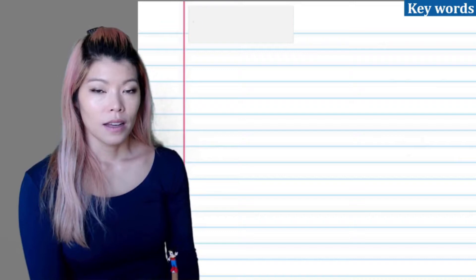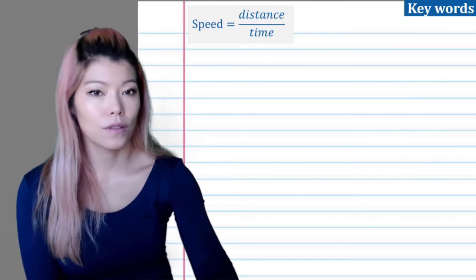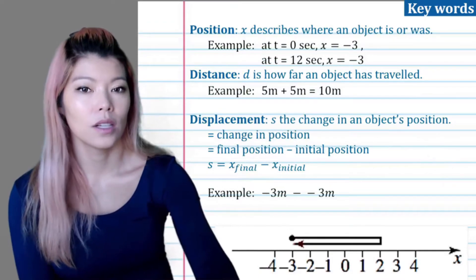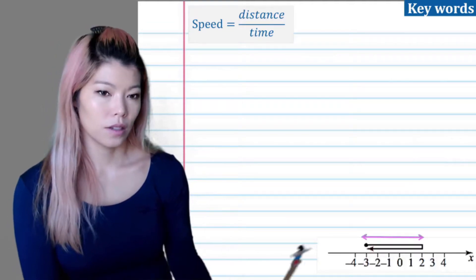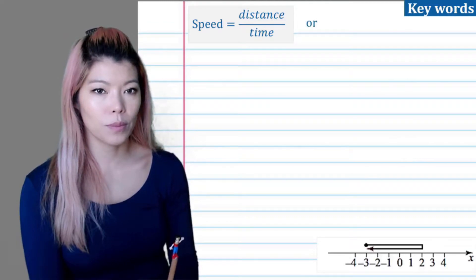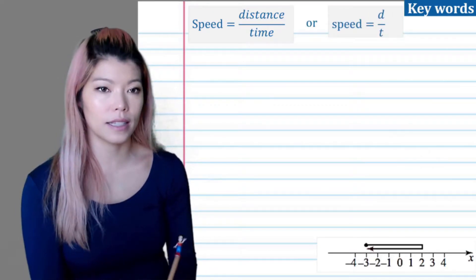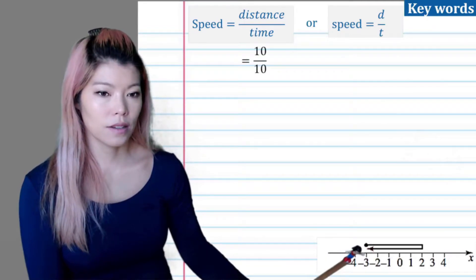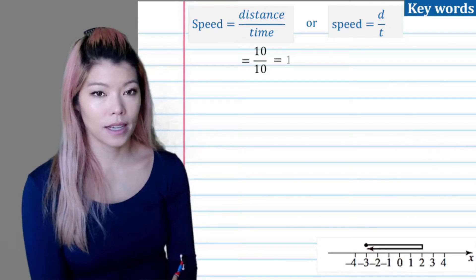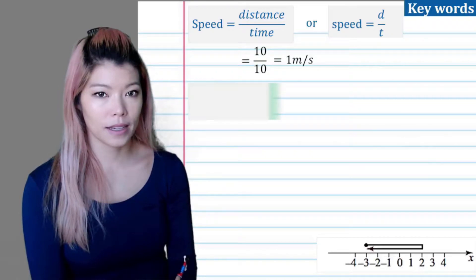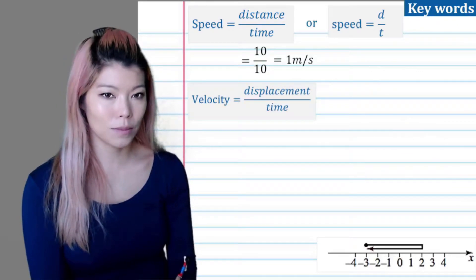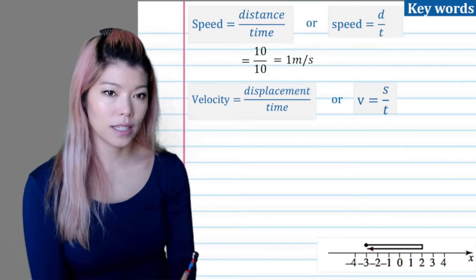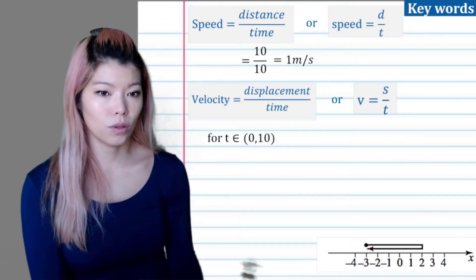Let's have a look at speed. Speed is distance over time. Looking back at the keywords, distance is this part and displacement is this part — speed has to do with distance. Speed equals d over t (we can't use s since s is displacement). So we have 10 meters over 10 seconds — she traveled at a speed of 1 meter per second. However, velocity is different: velocity is displacement over time, and since displacement was zero, velocity equals s over t.